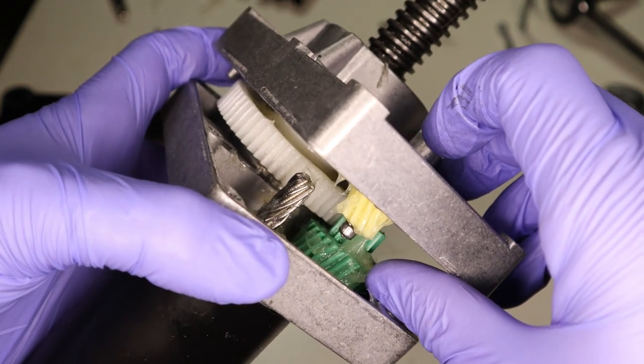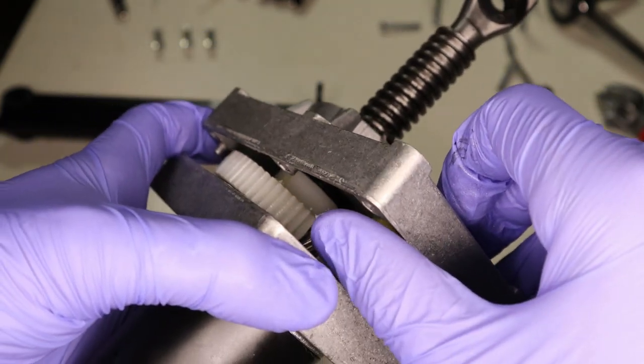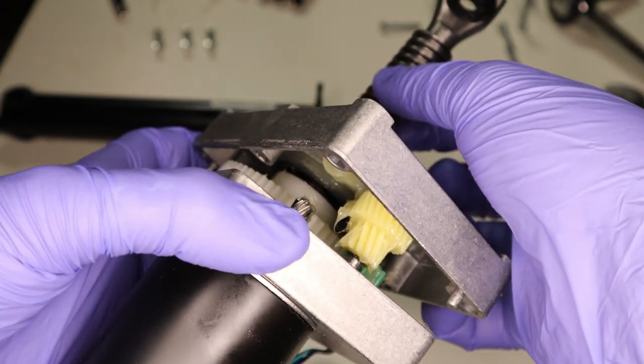Which then turns the big green gear, and then the little green gear, which turns the white gear, which is what turns this.